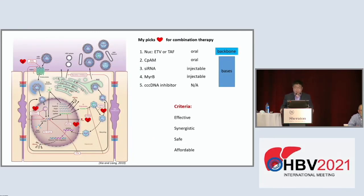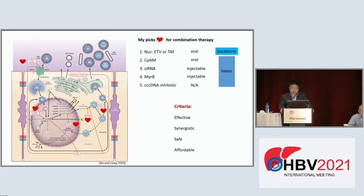My pick for combination therapy to eventually reduce cccDNA includes: nucleos(t)ide analogs as the backbone — they are approved, safe, and potent; clinical-phase compounds like CpAMs and siRNA, which can further inhibit DNA replication while siRNA can reduce antigenemia; entry inhibitors like myrcludex B, which has shown efficacy treating hepatitis delta and should also block HBV spread; and finally a cccDNA inhibitor, which we don't yet have but are working toward. Criteria for combination therapy targeting cccDNA should be effectiveness on different targets, synergy, safety, and affordability.